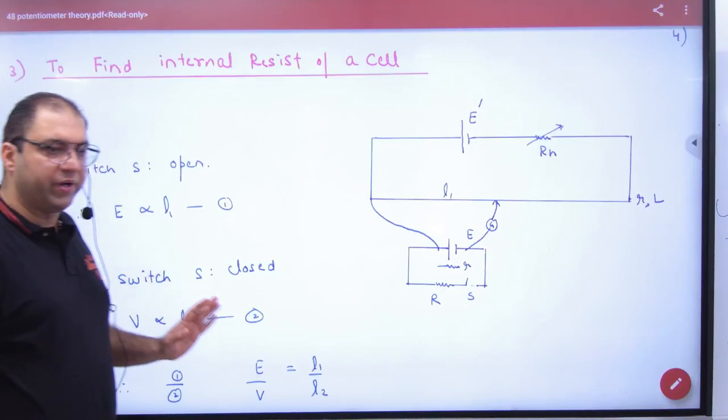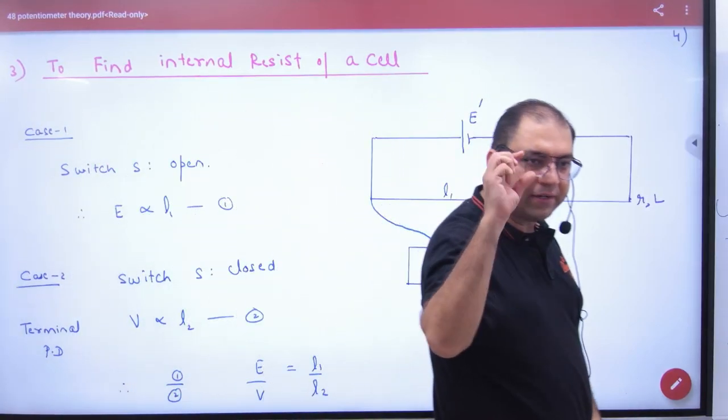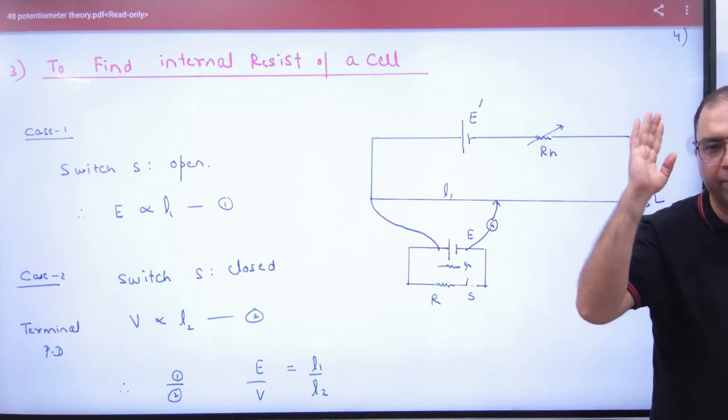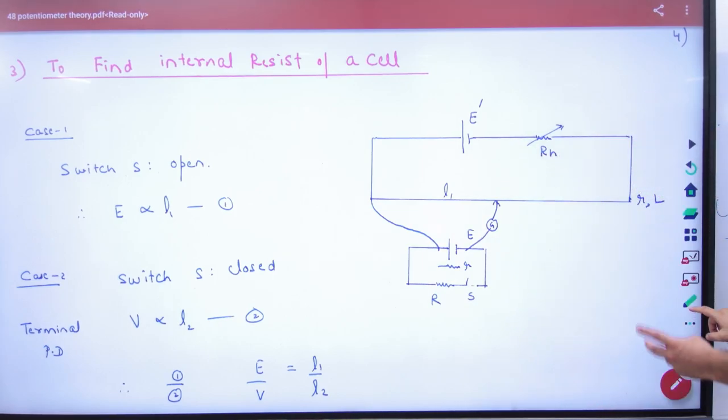Last application is potentiometer. This can be used to find any battery's internal resistance. How does it work? Look, there are two stages of the process.